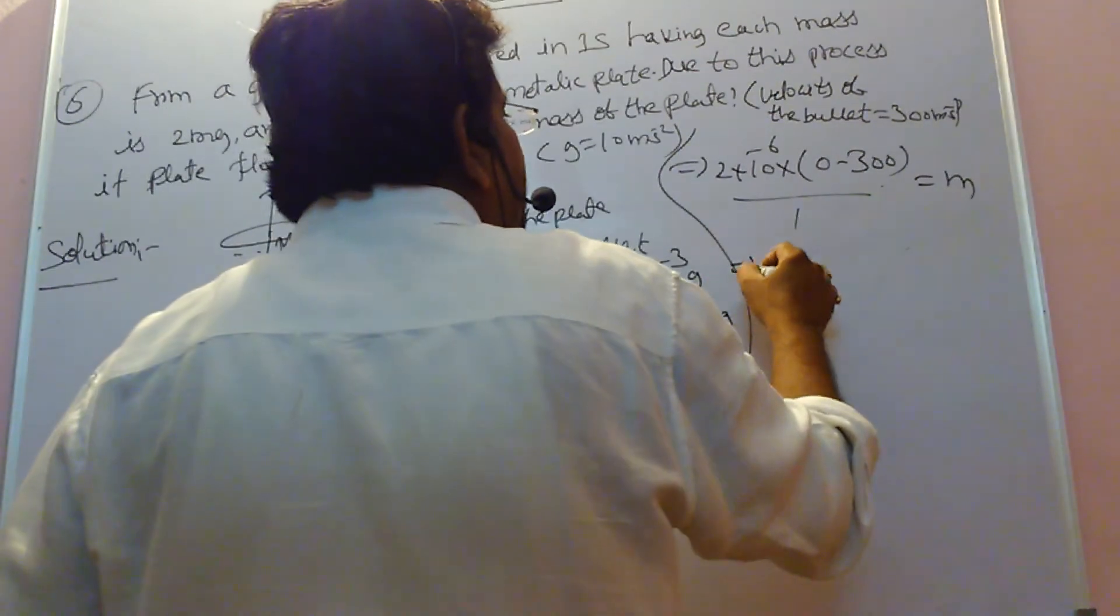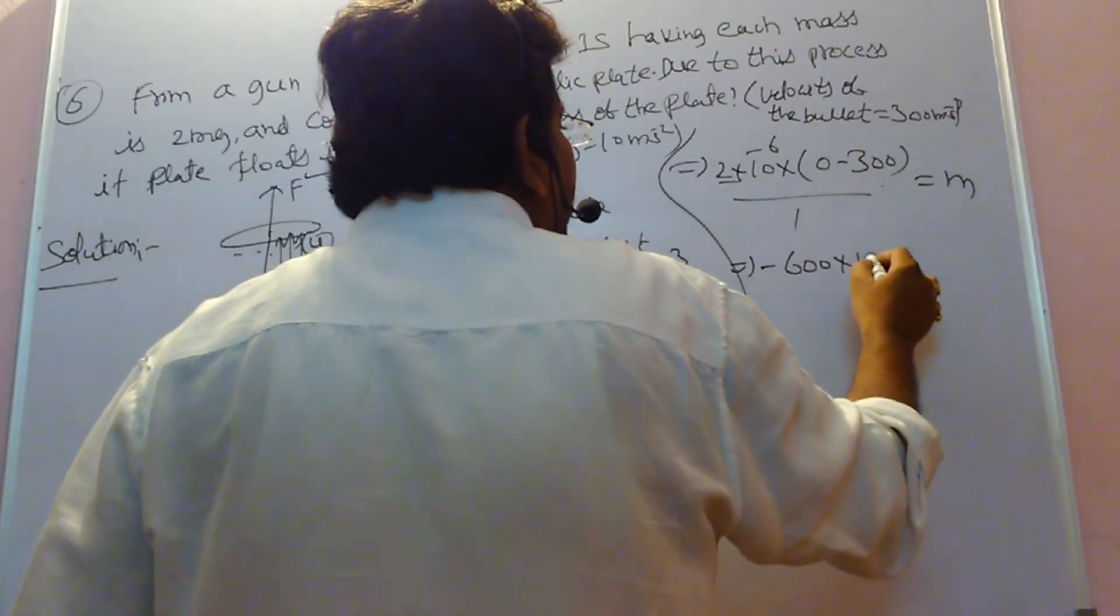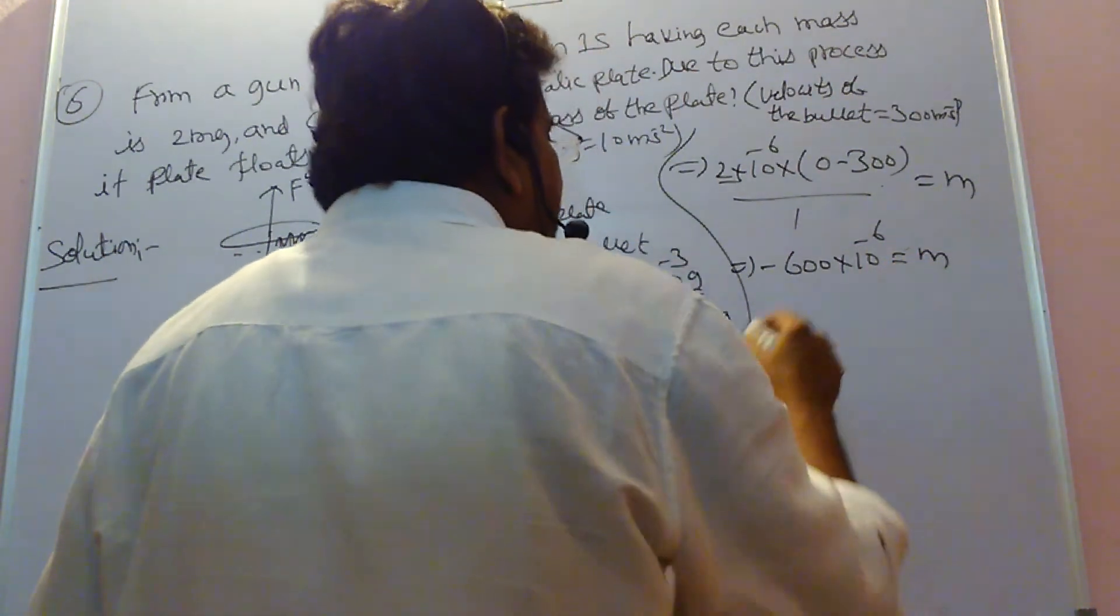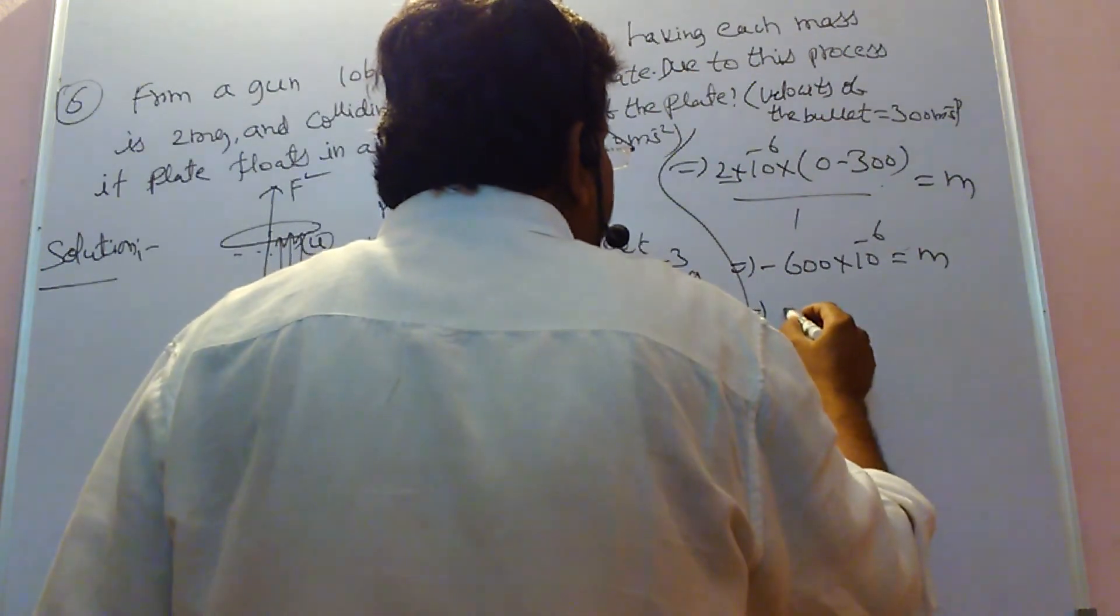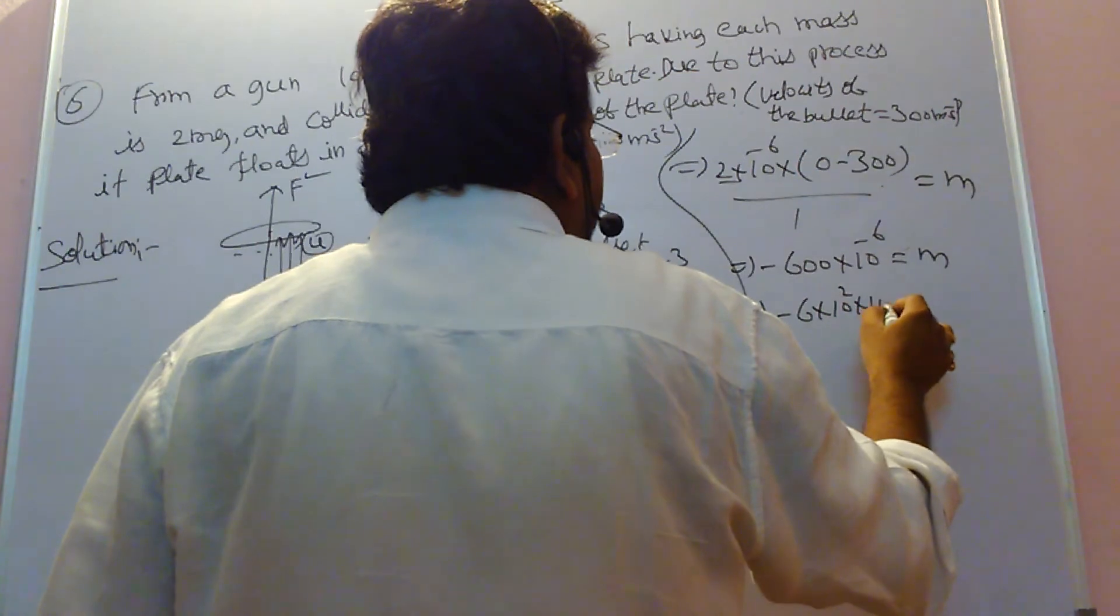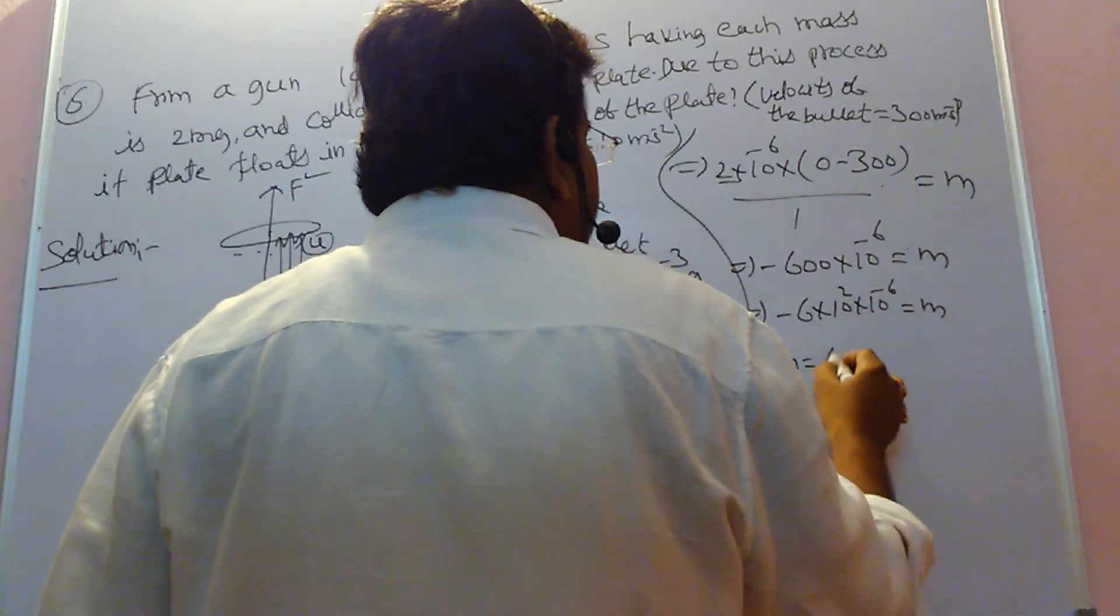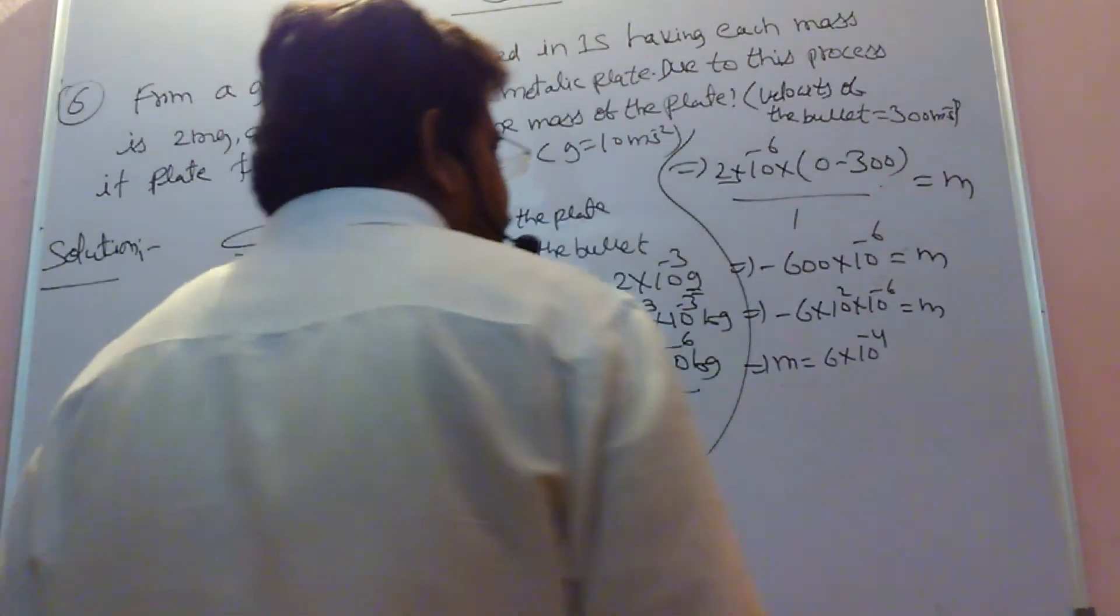Now we do 600 minus 600 into 10 power minus 6, that equals to small m. Otherwise, you write this as 6 into 10 power 2 into 10 power minus 6. Otherwise, you write this as 6 into 10 power minus 4 kilograms.